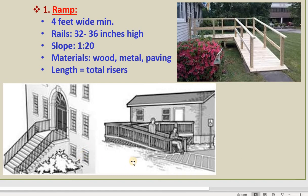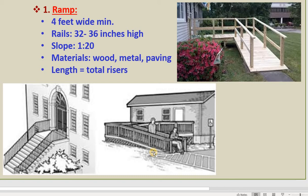Besides that, if you see a building with public service, you need to provide a ramp — that means a slope so a wheelchair can travel on it instead of steps, because they cannot manage steps. The slope maximum is again 1:20, and if there are rails, they need to be 32 to 36 inches high, with the ramp at least 4 feet wide so a wheelchair can travel on it.